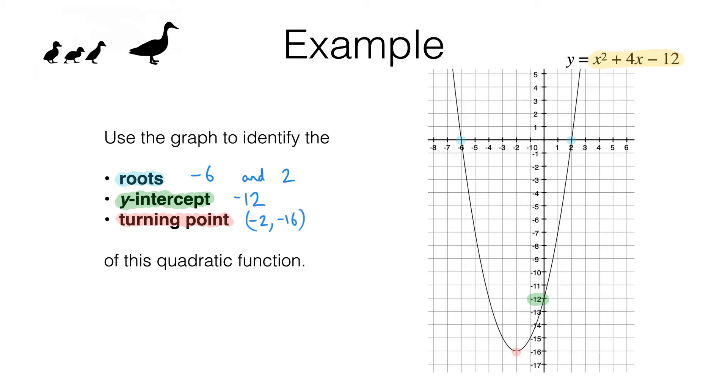We can test this for ourselves. Let's take 2. When x is 2, if you substitute that into here, you'll see we get 2 squared which is 4. Then we need to add on 4 times 2, so that's 8. And then we need to subtract 12. 4 plus 8 minus 12, that gives us 0. And that meets the definition of a root.